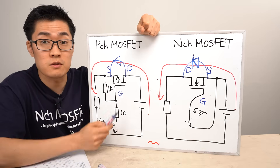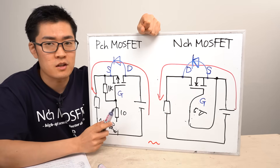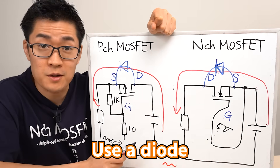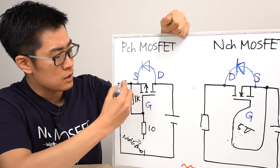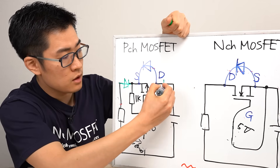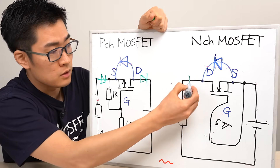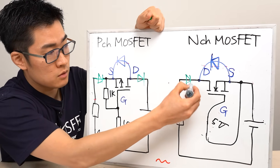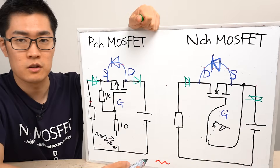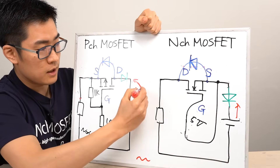With proper circuit design, reverse current can be effectively blocked. One simple solution is to add a diode, which can be placed on either the source or drain side — both configurations are acceptable. The same principle applies to N-channel MOSFETs: the diode can be connected to either the drain or source side. By adding the diode, reverse current is blocked and prevented from flowing.